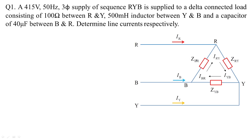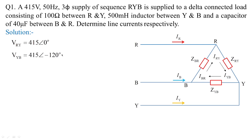First, collect the given data. The line voltage is 415 volts, taken as reference at 0 degrees. Following the phase sequence, V_YB is 415 at angle minus 120 degrees, and V_BR is 415 at angle minus 240 degrees.